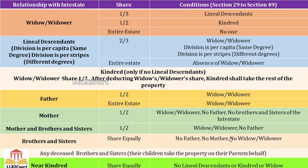What you need to remember here is: if lineal descendants are present, the property won't go to kindreds. Only in the absence of lineal descendants will the property go to kindreds. Kindreds are father, mother, brothers, and sisters. If widow is present, after deducting the widow's share, the property devolves to lineal descendants, and in the absence of lineal descendants, it goes to kindred.